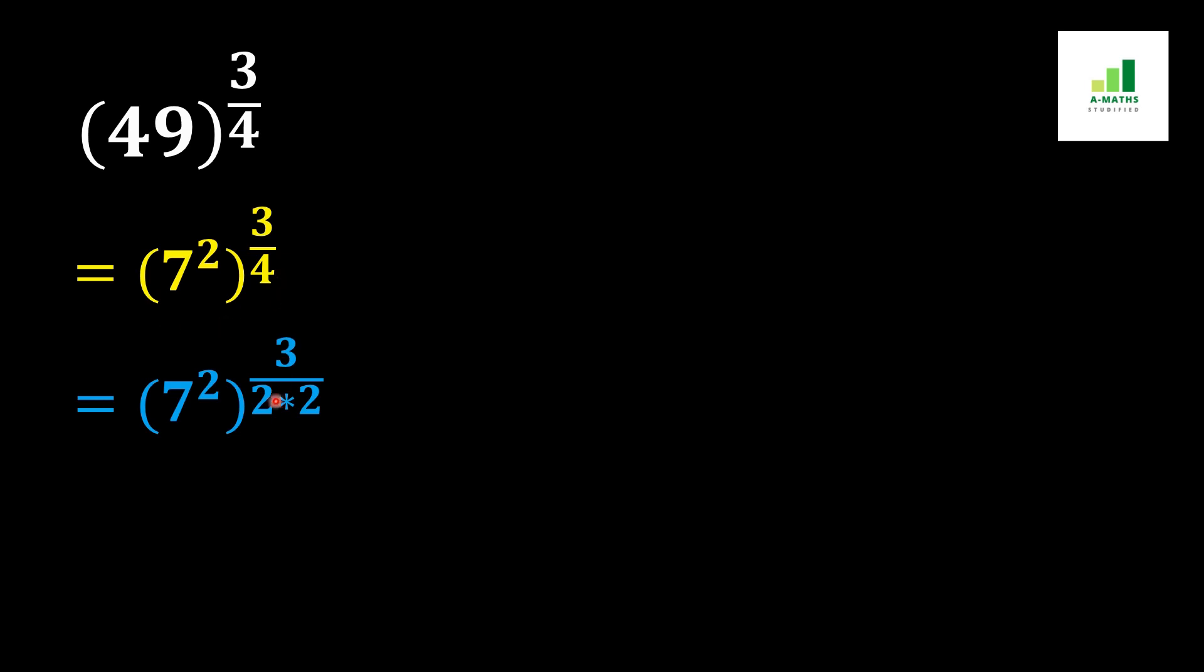Now in the next step we can write this 4 as 2 into 2, because 2 times 2 is 4. Now in the next step we should cancel out this 2 and this 2 together.